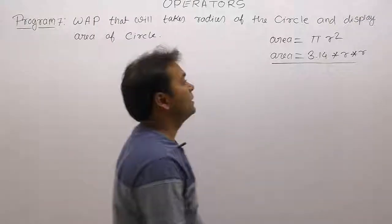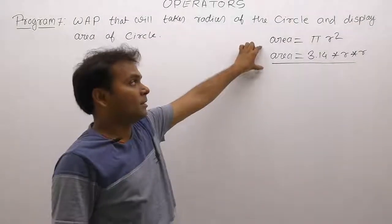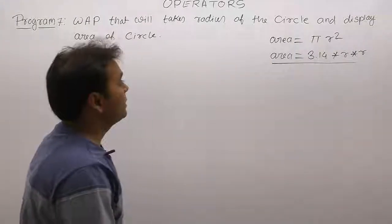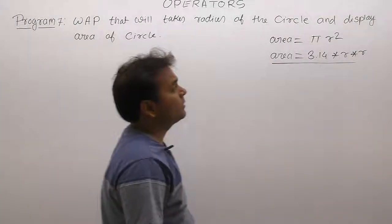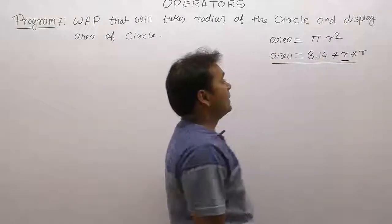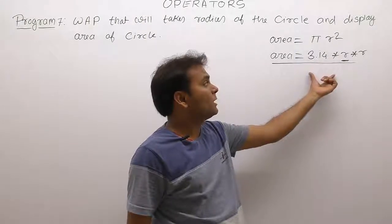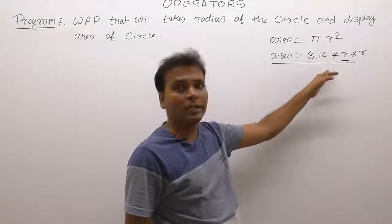First of all, it's an expression or formula. Then finally, how many inputs are required? Here only one input: only r or radius. Then for this expression, the result requires some result variable for storing area of the circle.